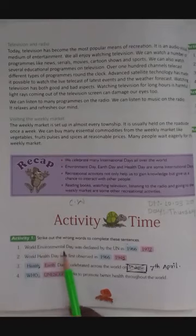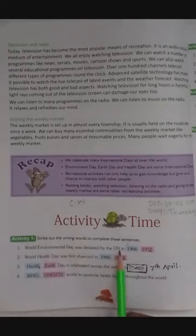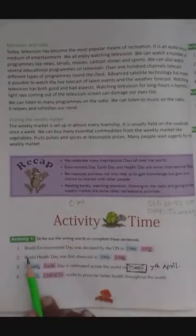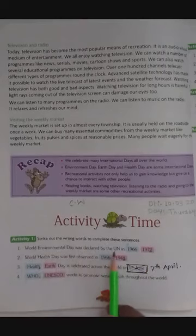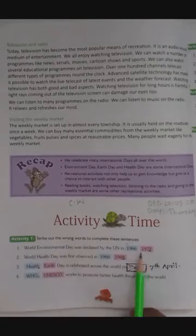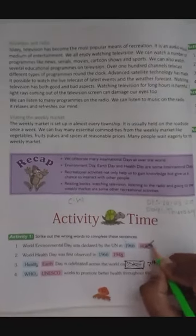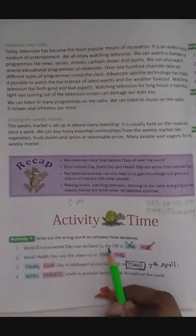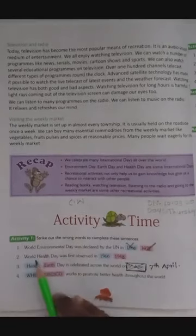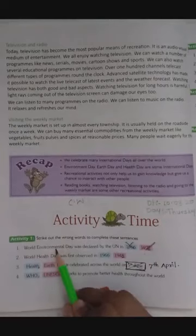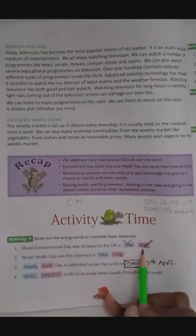Question number one: World Environment Day was declared by the UN in 1966/1972. World Environment Day कब घोषित किया गया था? Answer is 1972. Circle the answer 1972 and cross out 1966. The correct sentence: World Environmental Day was declared by the UN in 1972. जागतिक पर्यावरण दिवस UN ने 1972 को स्टार्ट किया था।